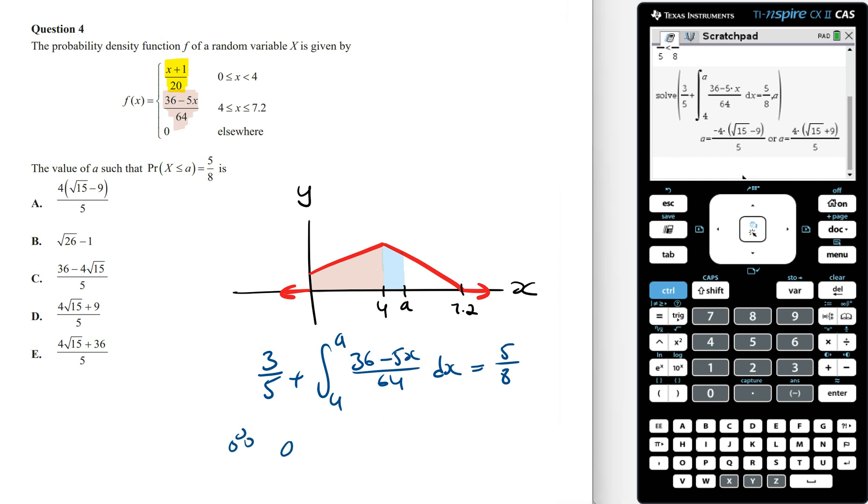Expanding it we are going to get the value of a is equal to 36 minus 4 times root 15 on 5, which is option C.